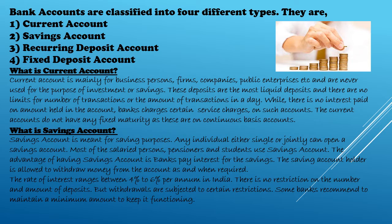The second type is a savings account, which is meant for saving purposes. Any individual, either single or jointly, can open a savings account. Most salaried persons, pensioners, and students have savings accounts. For students, a guardian who is already a bank account holder and is mature enough needs to be present — they appear as a nominee. The advantage of a savings account is that you earn a nominal rate of interest.